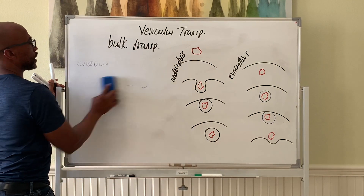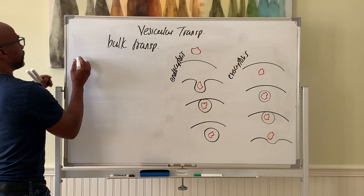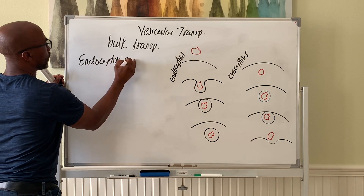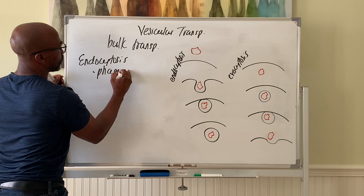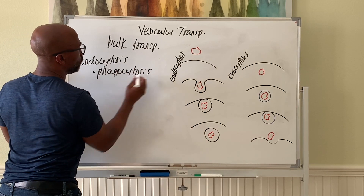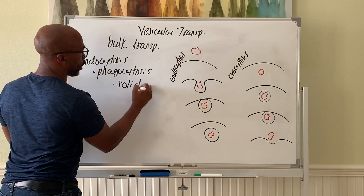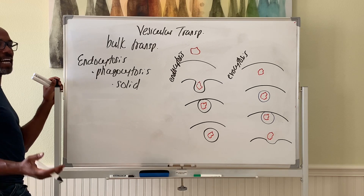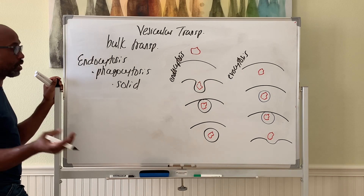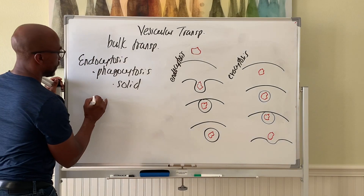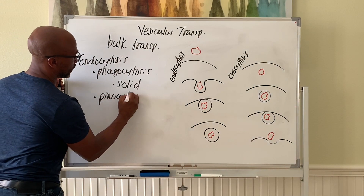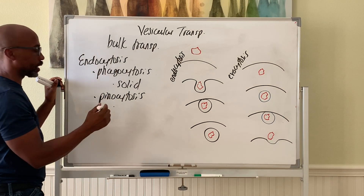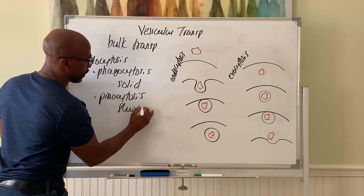Forms of endocytosis: we have what's called phagocytosis, used to ingest solid particles, sometimes called self-eating. This is what a cell might use to engulf a bacteria or a pathogen. Then you have pinocytosis, called self-drinking — this is how the cell brings in fluids in bulk.